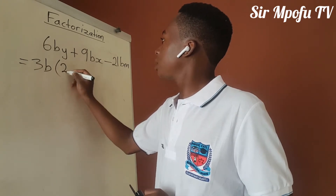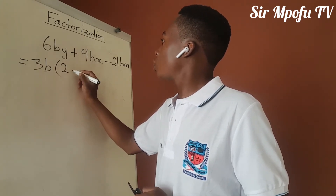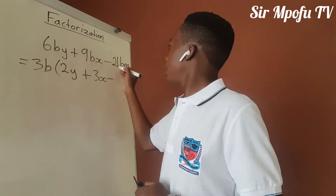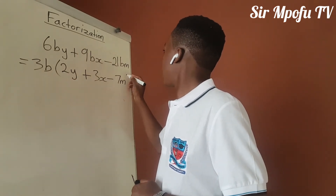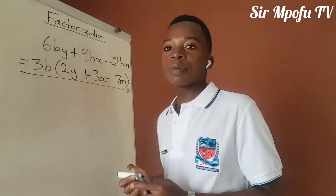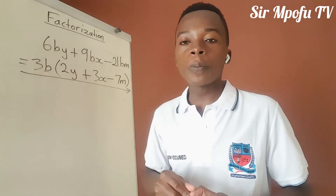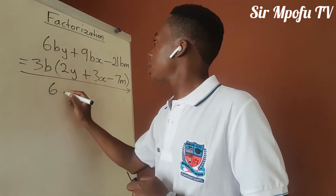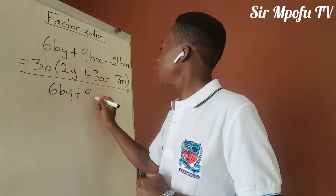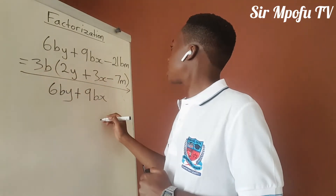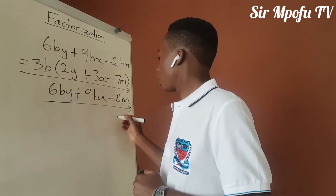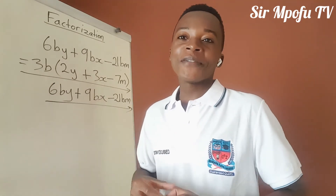If you divide 6by by 3b, it will be 2y. Plus, if you divide 9bx by 3b, it will be 3x. Minus, if you divide 21bm by 3b, it will be 7m. There is no mathematical solution that cannot be proved, so let's prove this by expanding. 3b times 2y is 6by. 3b times 3x is 9bx. 3b times negative 7m is negative 21bm. Proved.